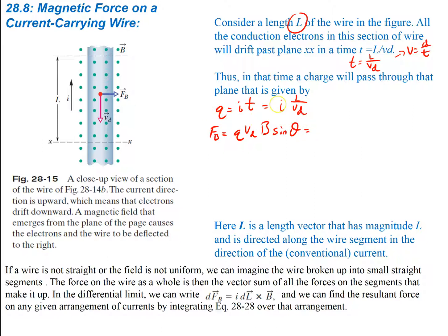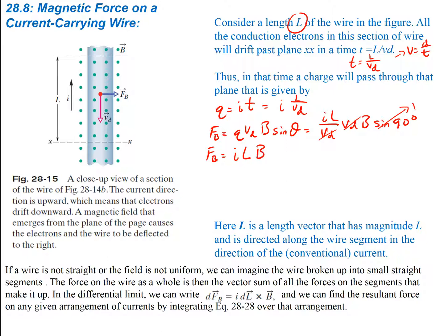The force due to the magnetic field is Q times drift velocity times magnetic field times sine of theta. Plugging in Q gives current times L divided by drift velocity, times drift velocity, times B, times sine of 90 degrees, since the angle between velocity and magnetic field is 90 degrees — everything is perpendicular. The drift velocities cancel and sine 90 equals 1, so the force from the magnetic field is simply the current times the length times the magnetic field: F = ILB.